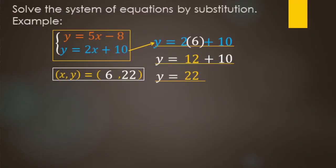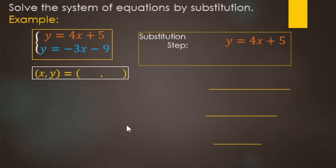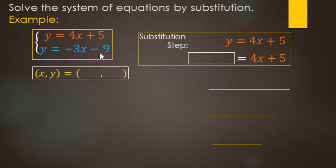Our ordered pair that makes both equations true is (6, 22). Now for the second example: to use substitution, our substitution step starts with either equation. We have y equals 4x plus 5, and from the other equation y equals negative 3x minus 9, so we replace y with negative 3x minus 9.